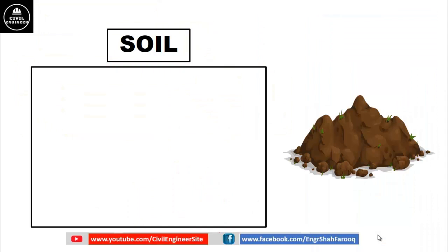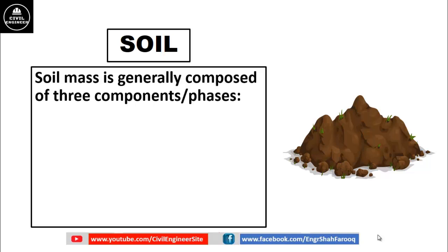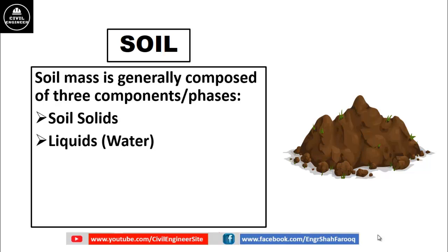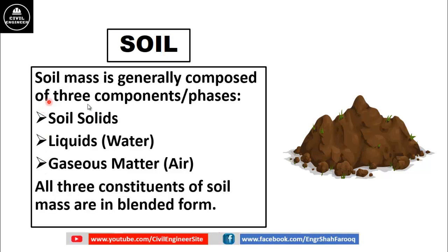Soil is a material which is in direct contact with one of the important structural components — the foundation. Soil mass is generally composed of three components or phases: the first one is soil solids, the second is liquid or water, and the third is gaseous matter, that is air. All three constituents of the soil mass are in blended or mixture form.